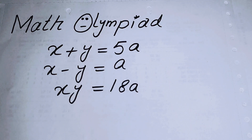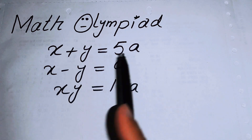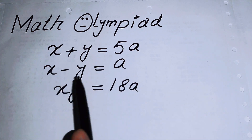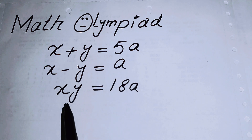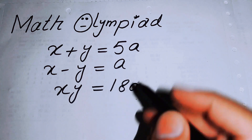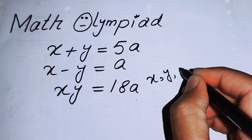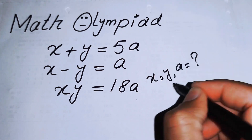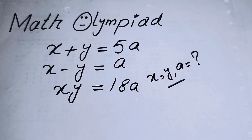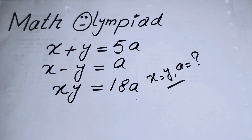Hello everyone, welcome back to the Map of Mathematics. In this video we are going to solve a system of equations problem. We have x plus y equals 5a, x minus y equals a, and xy equals 18a. We will find the values of x, y, and a.